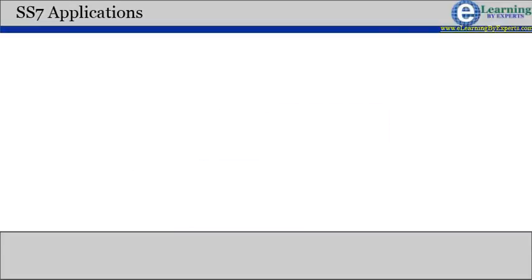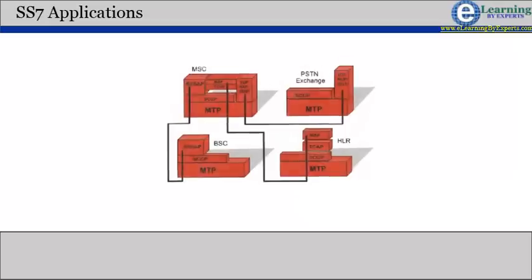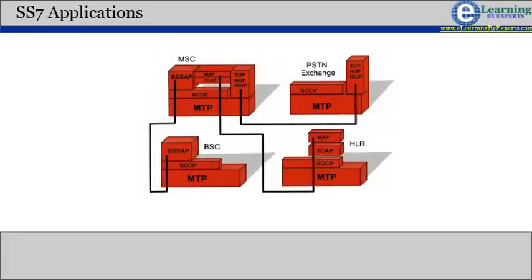Let us now look into some of the interactions involving SS7 protocol stack and PSTN, GSM and UMTS networks. Control plane in the PSTN networks or in PSTN GSM and UMTS interconnect uses ISUP based SS7 signaling.